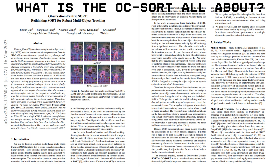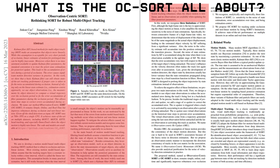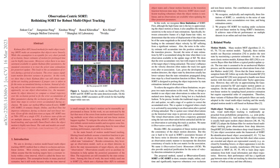What is OCSort all about? OCSort stands for Observation-Centric Sort. It's a new method for tracking multiple objects in videos. The main idea is to focus more on what the camera actually sees — called observations — instead of just relying on predictions about where objects might be.